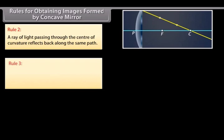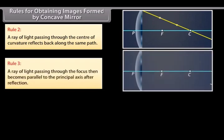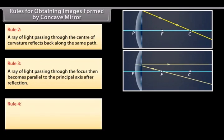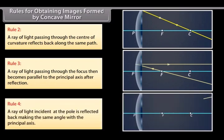Rule 3: a ray of light passing through the focus then becomes parallel to the principal axis after reflection. Rule 4: a ray of light incident at the pole is reflected back making the same angle with the principal axis.